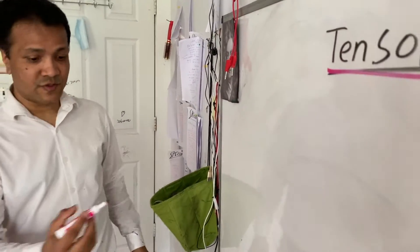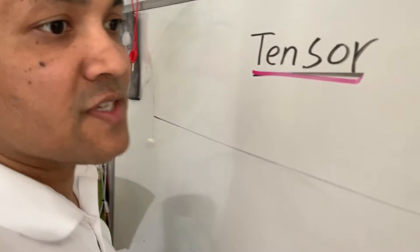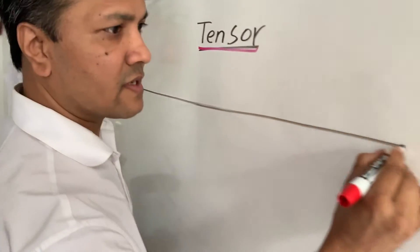So Tensor is a family of numbers. Today we're going to try to understand the brief history of Tensor. It starts with Sir Isaac Newton and ends with Albert Einstein.